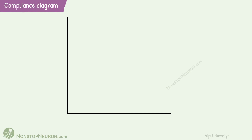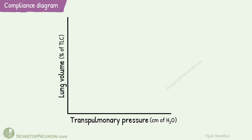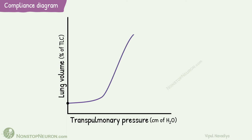Now let's see the same changes in the form of a graph. In this graph, the x-axis shows transpulmonary pressure and the y-axis shows lung volume. We start from the point where lungs are completely collapsed. Initially, as we raise the transpulmonary pressure, there is a small change in lung volume. This is because of very high surface tension due to a deficit of surfactants at the air-water interface. With further increase in pressure, the surface tension is overcome and the airway starts opening, resulting in an almost linear expansion of the lungs. Then as we approach total lung capacity, the expansion rate again decreases.